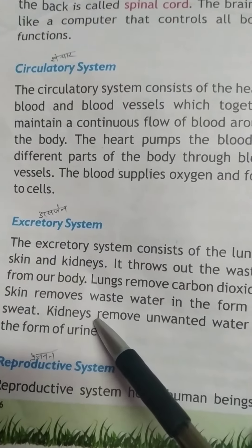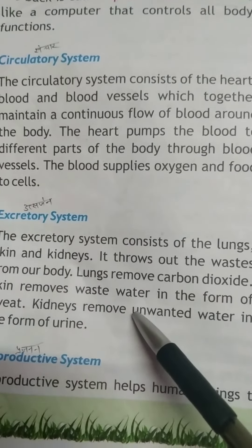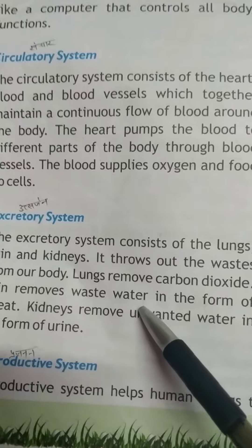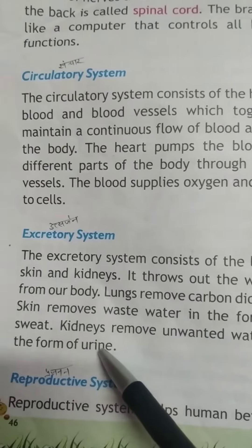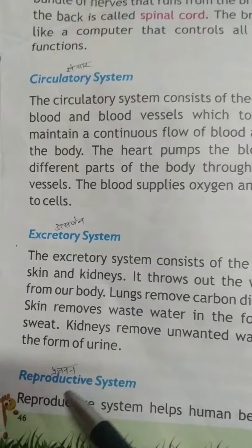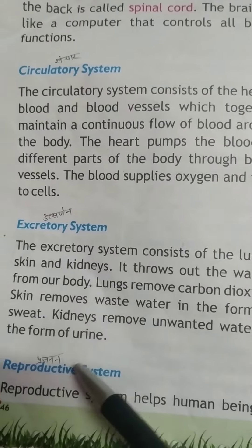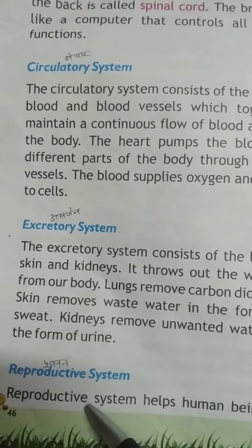Kidneys remove unwanted water in the form of urine. اور جو ہماری kidneys ہوتی ہیں وہ unwanted water — یعنی کہ جو جسم میں کام نہیں آتا — اس water کو urine کی روپ میں باہر نکالتی ہیں. Now reproductive system — یعنی کہ پراجنان تنتر.